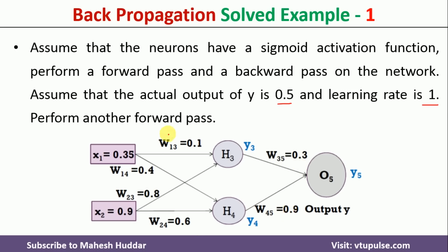We need to propagate the input through the network by calculating the output at the hidden units as well as the output at the output layer. Once we calculate this output, we check the error at the output unit, then propagate that error back to the hidden units and calculate the error there too. Based on these error terms, we update the weights and then perform another forward pass. We repeat this process until we are happy with the error at the output layer.